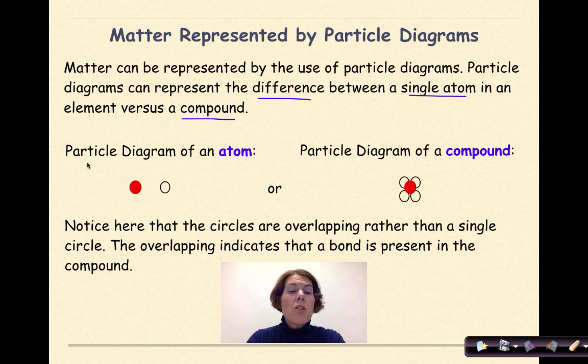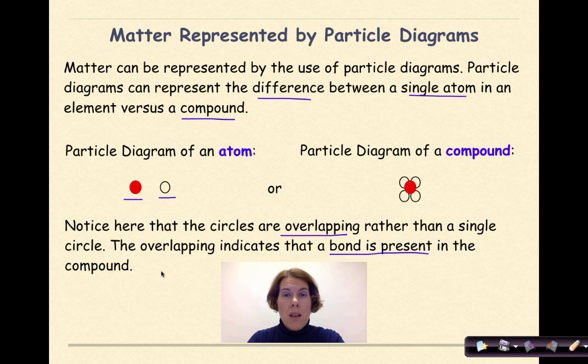So a representation of a particle diagram of an atom might be this red sphere or this clear sphere right here. A particle diagram of a compound could have the red sphere overlapping the clear spheres to represent a bond. Notice here that the circles are overlapping rather than a single circle. Like I said before, the overlapping indicates that a bond is present in the compound.